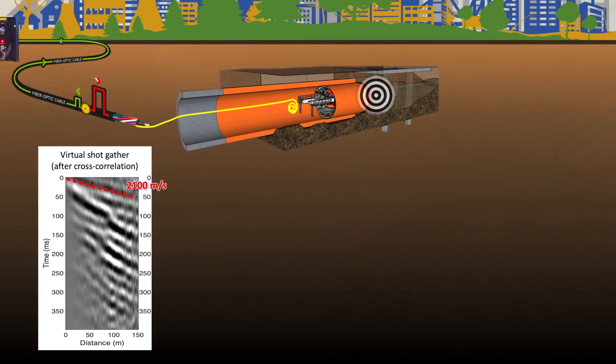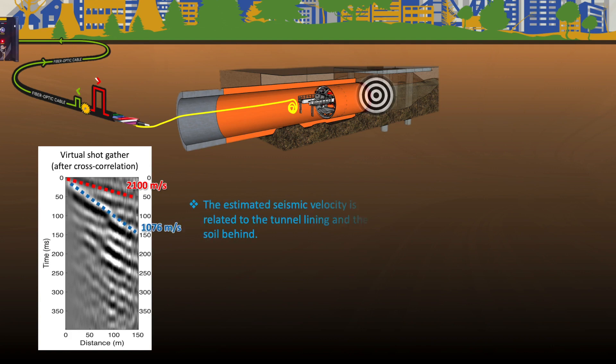The first arrival with a velocity of 2100 m/s could be the shear wave, primarily propagating in the tunnel lining. The strong event with a velocity of 176 m/s could be the surface wave sampling both the tunnel lining and the soil behind. Due to the influence of the segment lining, the measured surface wave velocity could be higher than the shear wave velocity of the rock and soil around the tunnel.